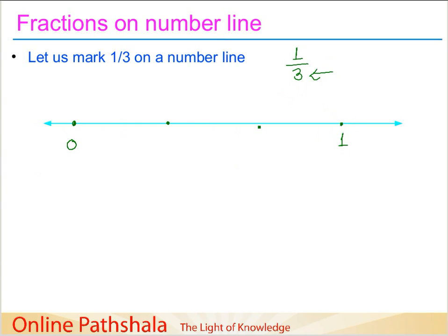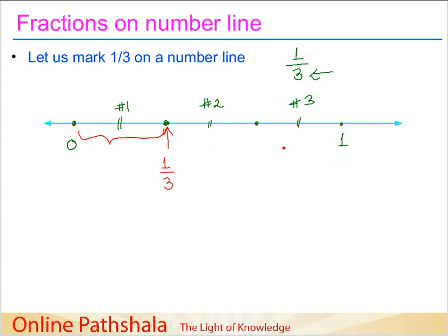I'm trying my best to get 3 equal parts — and we have divided into 3 equal parts. This is part 1, this is part 2, and this is part 3. Now we are supposed to represent 1/3, so we just need to take 1 part out of these 3 parts. So this point here — this is 1 part out of 3, essentially 1/3 of the whole.